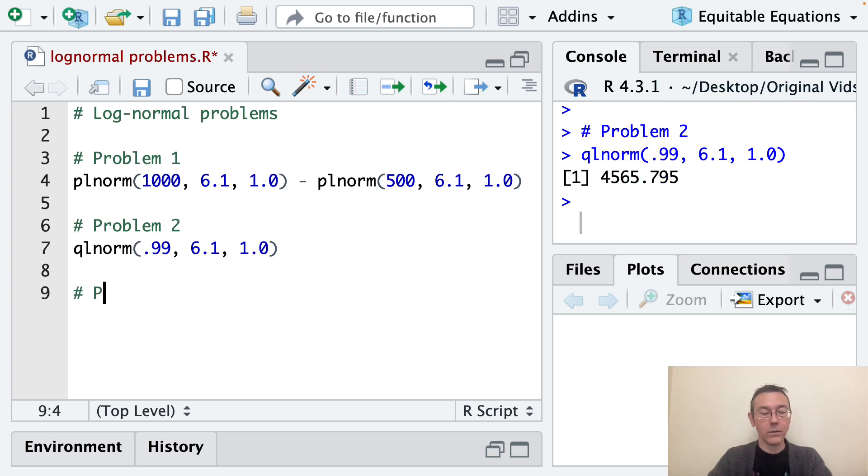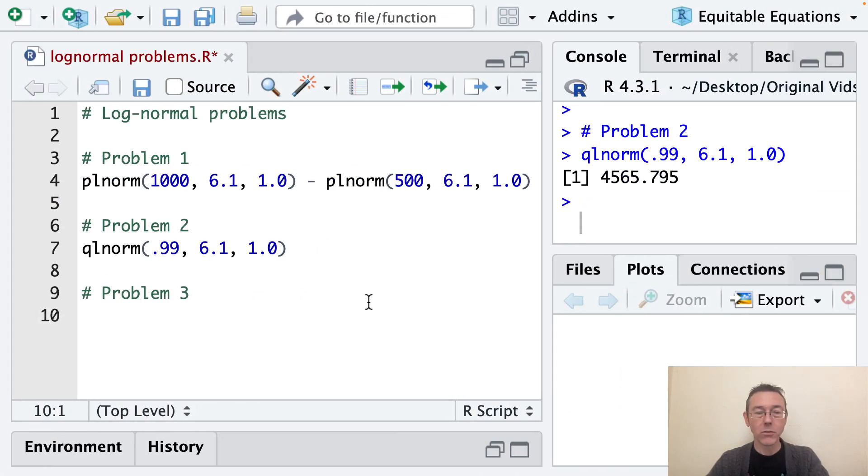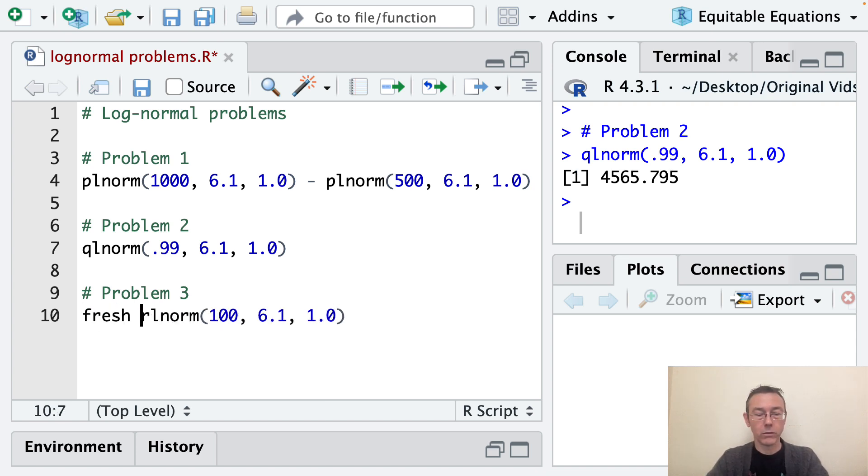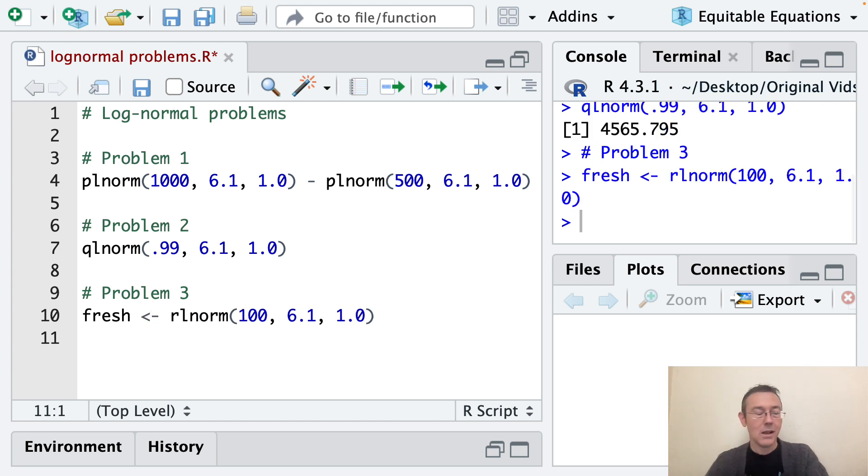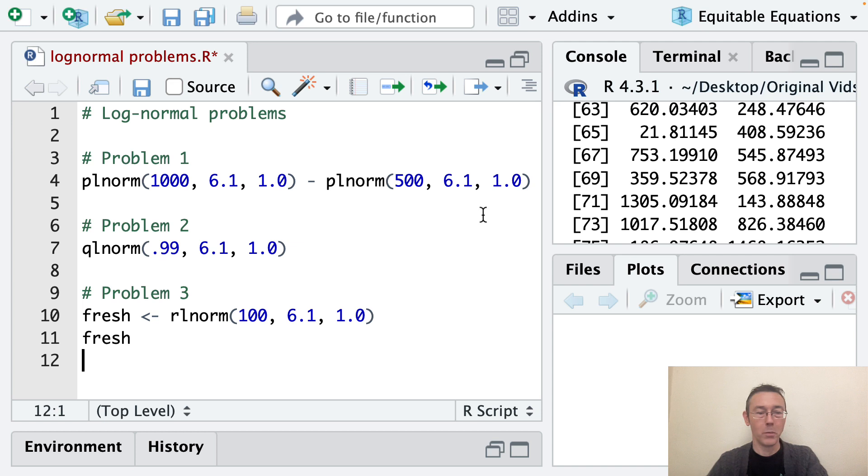Now we're going to put in a note for problem three. Simulate selecting 100 colleges at random. Plot a histogram of freshman enrollments at those colleges. So I'm generating random values, so this is going to be an rlnorm. I want 100 values from the same distribution with a mean of 6.1 and a standard deviation of 1.0 for the corresponding normal distribution. Let's save this as fresh. And let's just go ahead and print that out so you can just see that we got a bunch of numbers that look like they might be freshman college enrollment numbers. That makes sense.